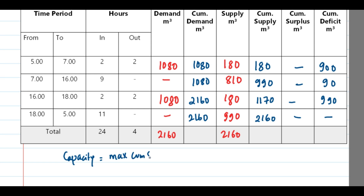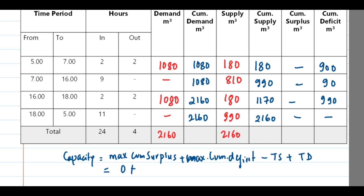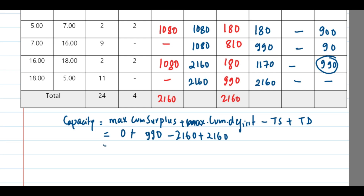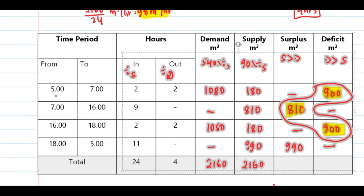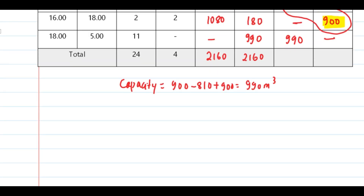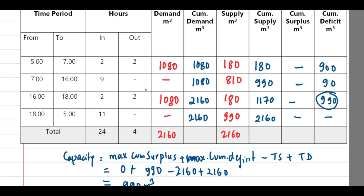The formula is: Capacity = max cumulative surplus + max cumulative deficit − (total supply + total demand adjustment). Maximum cumulative surplus is 0 — there is no cumulative surplus. Maximum cumulative deficit is 990. Since total demand equals total supply, we can omit that term. So 0 plus 990 equals 990 cubic meters. From both processes we get the same answer: 990 cubic meters. That's all for now, thank you for watching.